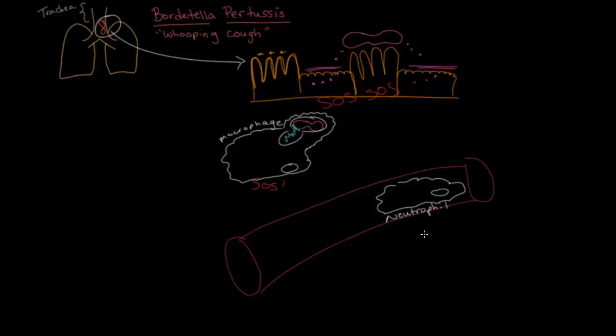But when an SOS signal goes out, the blood vessels in the infected tissue become leaky. I mean, the blood vessels now have these tiny little gaps in them that the neutrophil can squeeze through and into the tissue.